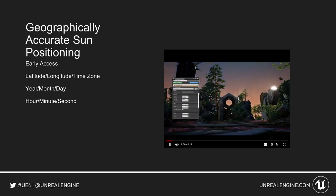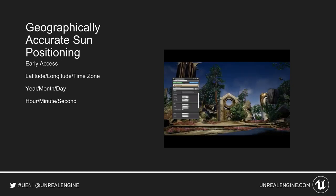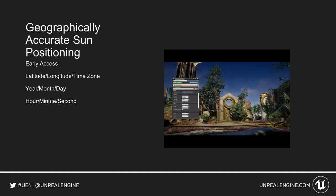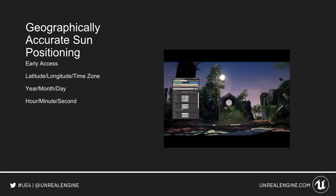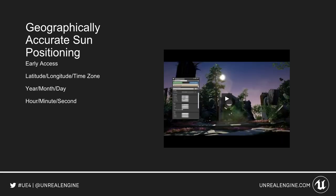There's a new plug-in for geographically accurate sun positioning. It's in early access and gives us access to the ability to set the latitude, longitude, and time zone, as well as year, month, day, and even down to the hour, minute, and second. It gives you a geographically accurate sun, which is great for real-world visualization or for a dramatic time-of-day system inside your project.